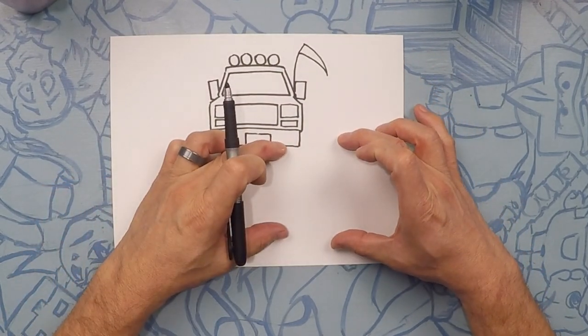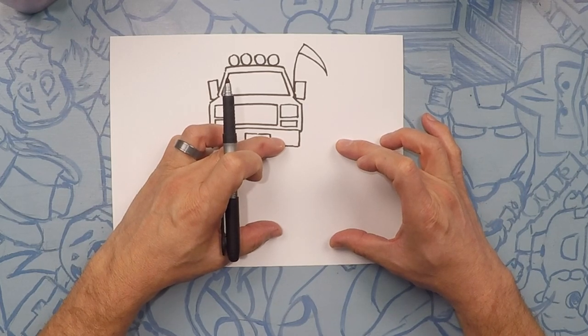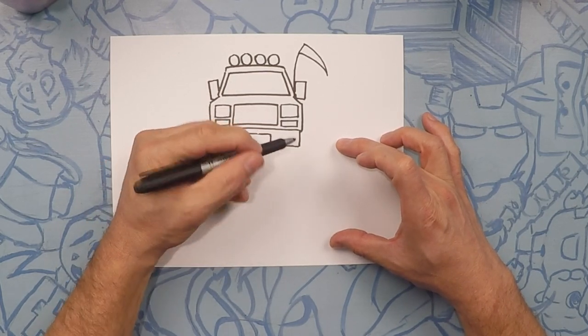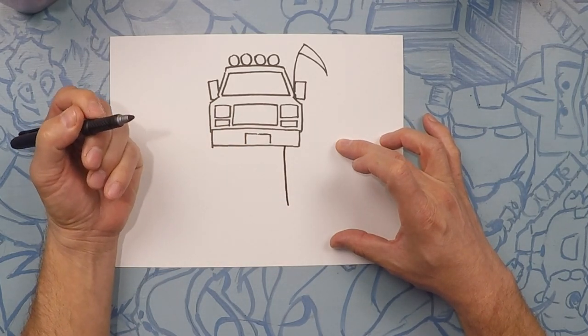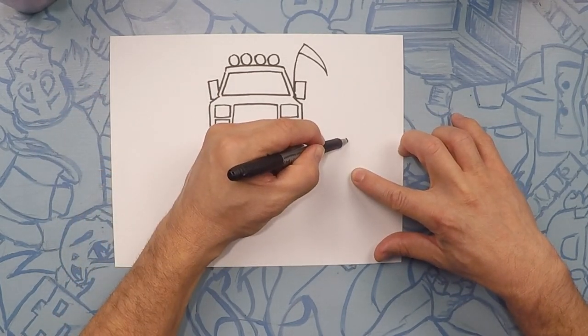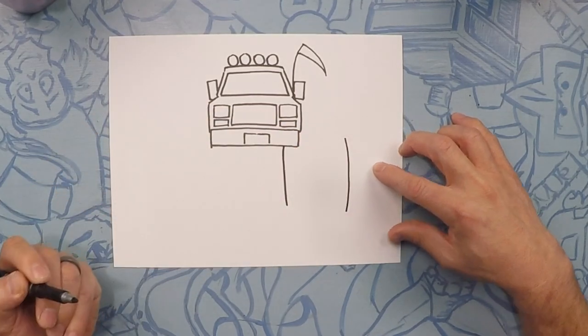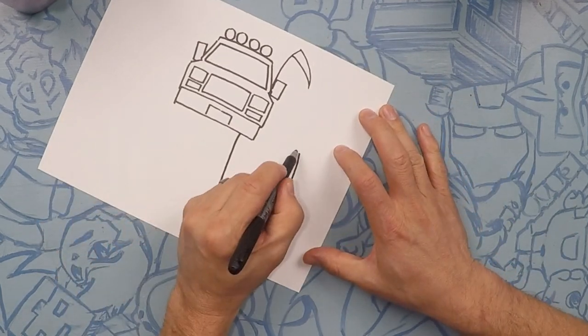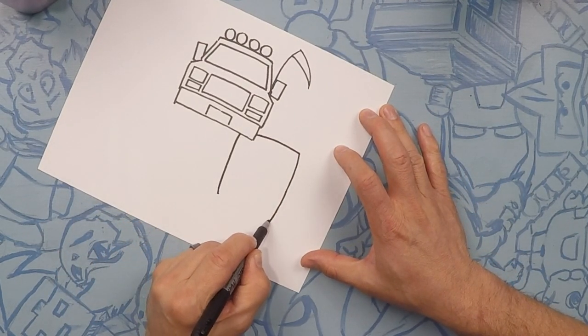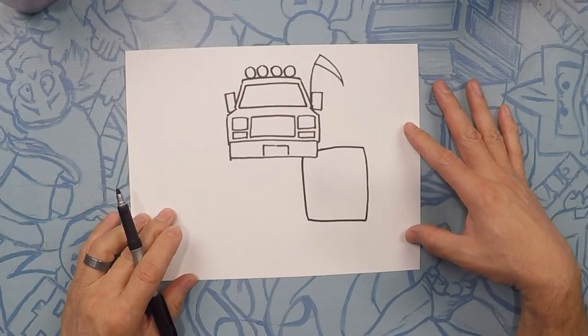Next we're gonna draw the wheels. The wheels are gonna be like, kind of like squares but kind of not perfect squares. So let's go ahead and draw a line straight down. Another line about this wide. However wide you want to do it. Good. Look at that big old tire. And let's close those lines off. Awesome.